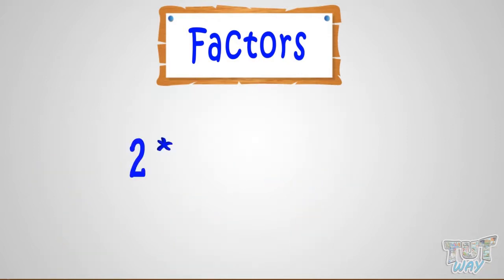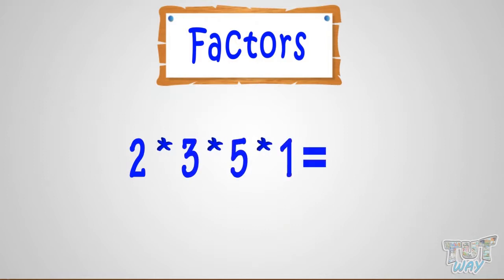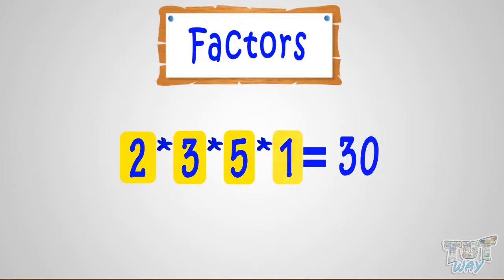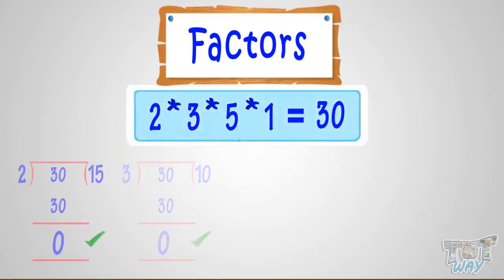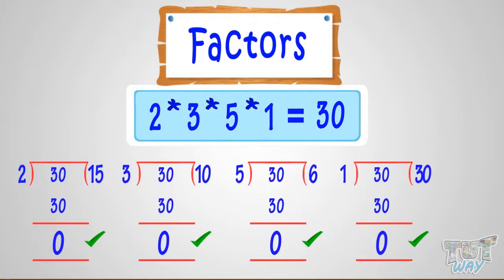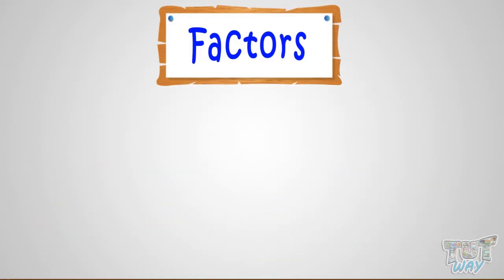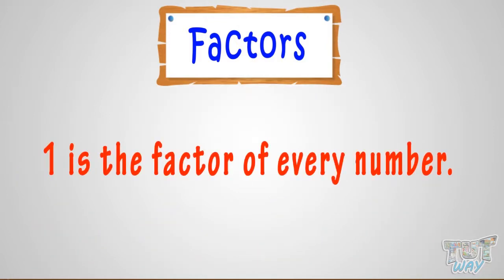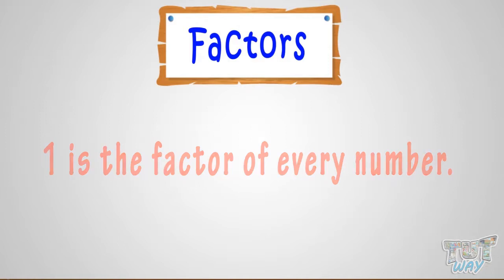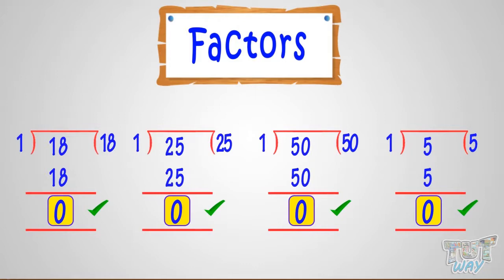2 multiplied by 3 multiplied by 5 multiplied by 1 equals 30. So, 2, 3, 5, and 1 are factors of 30, and they can divide 30 completely — no remainder will be left. Kids, 1 is the factor of every number, because 1 can divide any number.